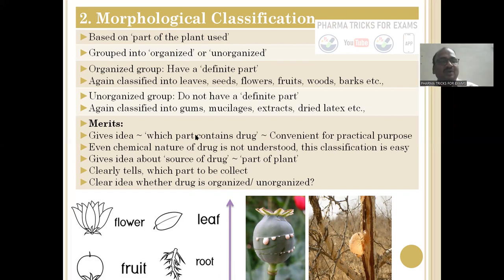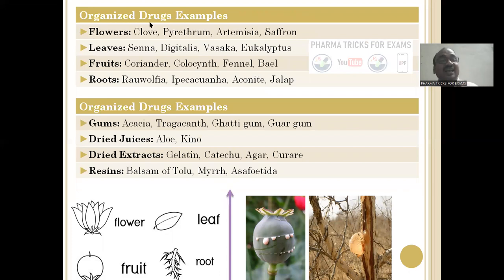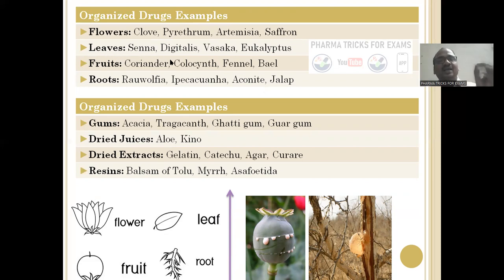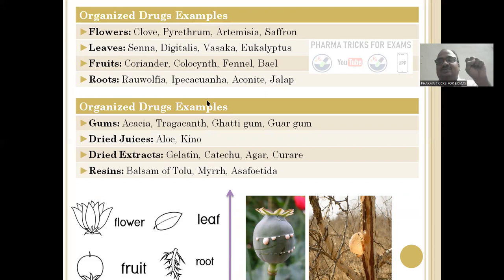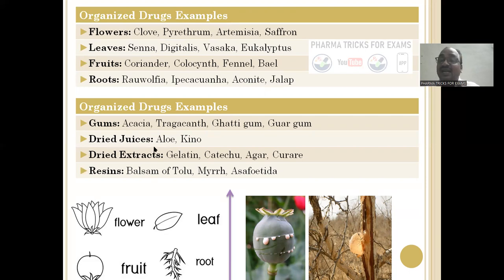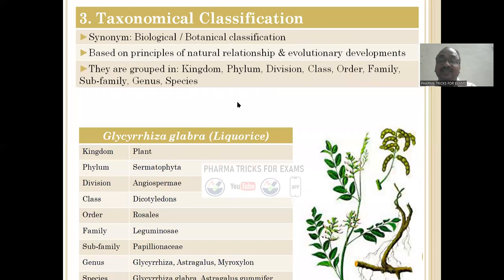Examples of organized drugs: Clove (flower) and Artemisinin, Saffron (flower); Senna, Digitalis, Vasaka, Eucalyptus (leaves); and fruits. The drug is directly present in the flower of clove; the remaining entire part of the plant is not as important. Unorganized drug examples: Acacia (gums), Aloe and Kino (dried juices), and dried extracts. All these examples should be written in the examination.